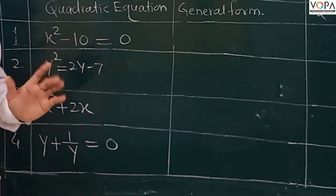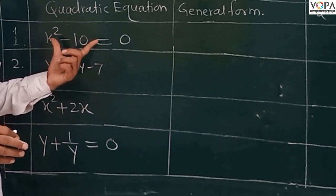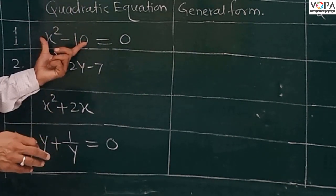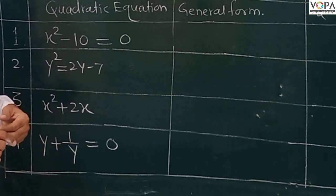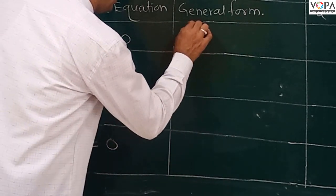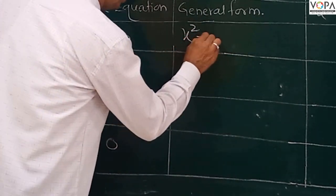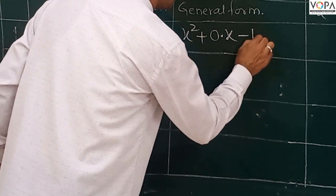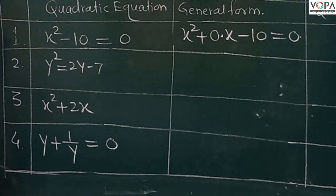We know this is a quadratic equation. The middle term is absent here, but it is still a quadratic equation. To write it in general form, the variable is x, so we write: x² + 0·x - 10 = 0. This is the general form.